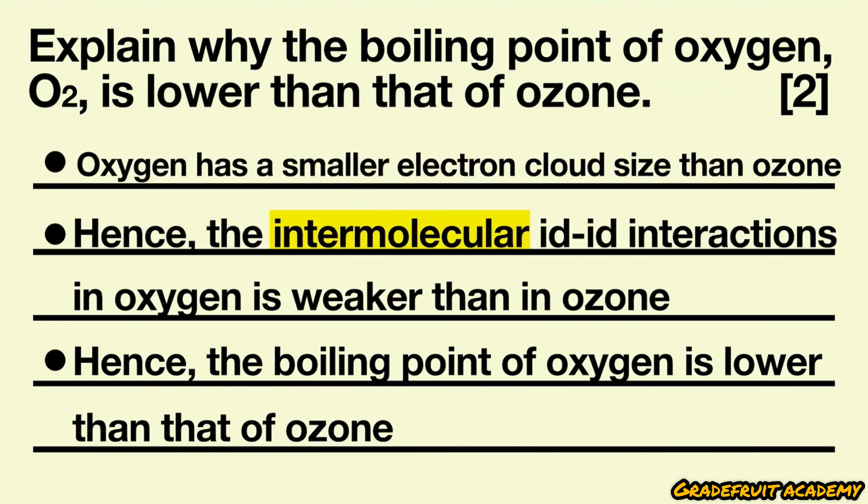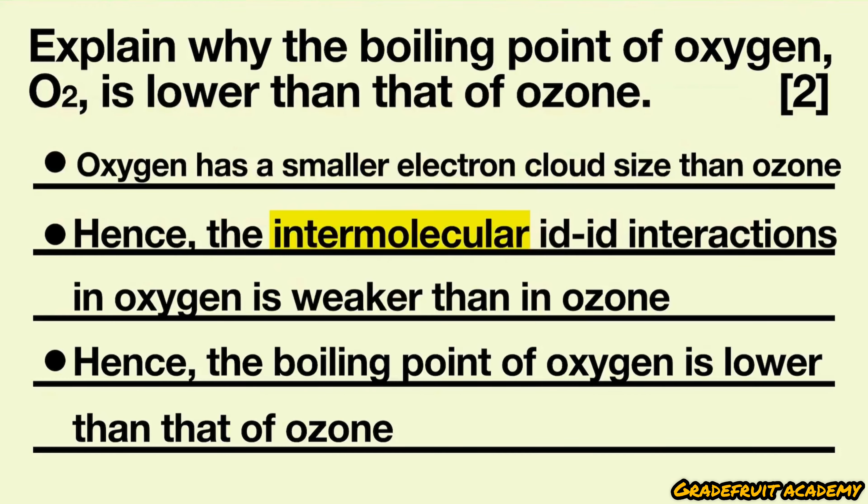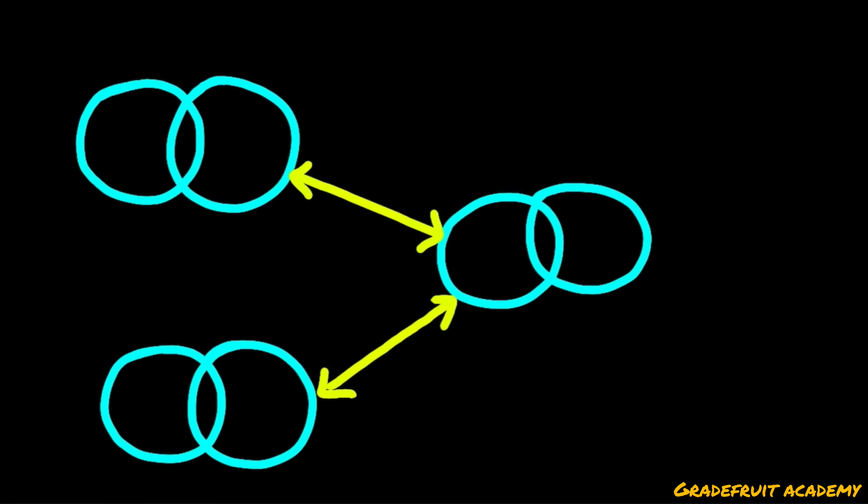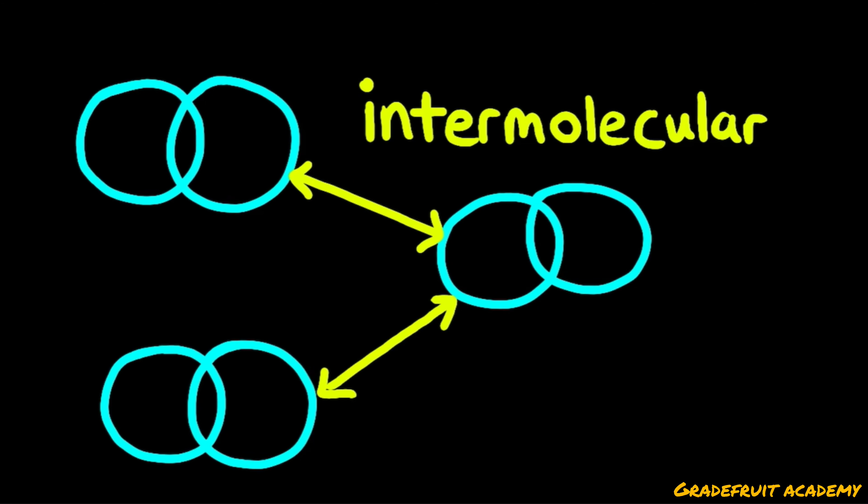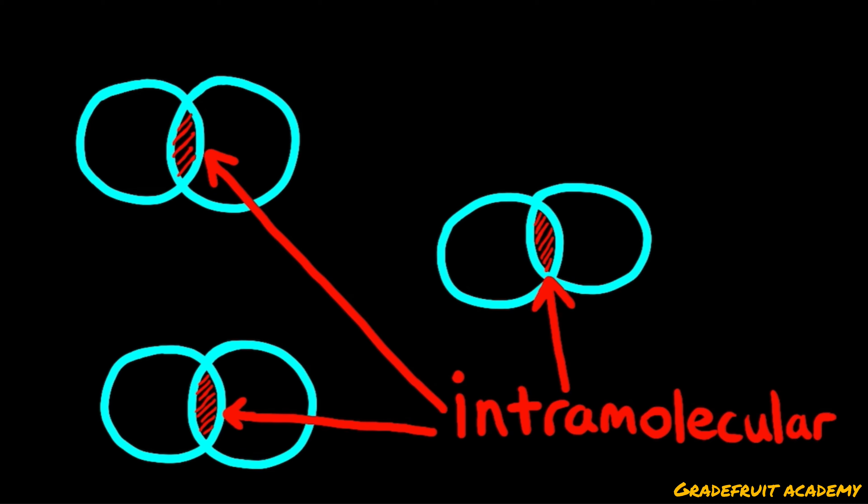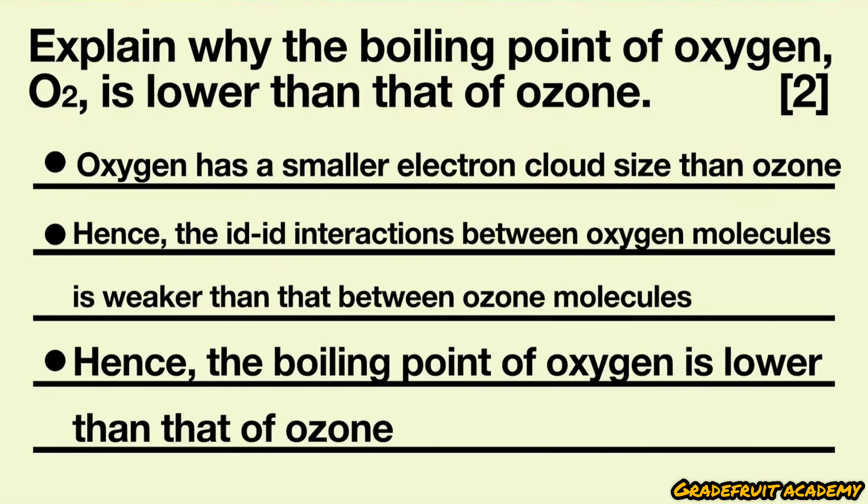For the second bullet point, instead of saying id-id interactions in oxygen, we should either add the intermolecular id-id interactions in oxygen or rewrite it as id-id interactions between oxygen molecules. That's because we need to show that these interactions are between the molecules, aka intermolecular, and not within the molecules, aka intramolecular. This makes our answer much more specific and conceptually correct.